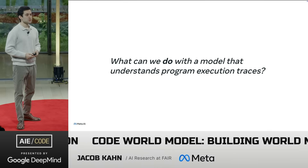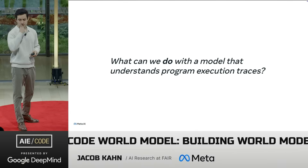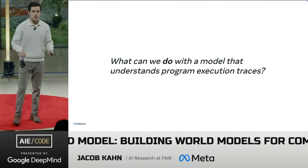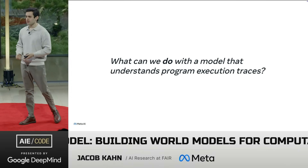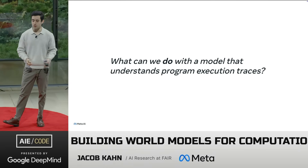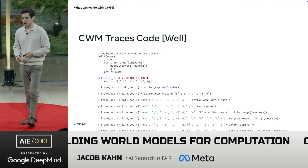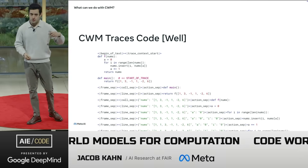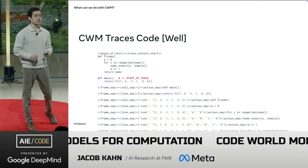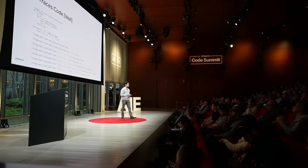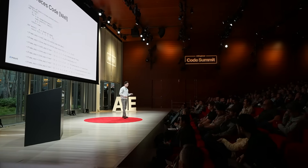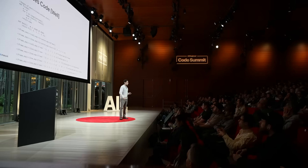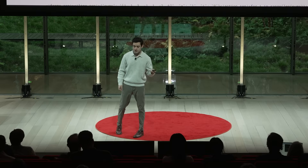What can we actually do with a model that understands program execution traces and has a good understanding of how a program will run, predicting future state? CWM traces code really well. We've shown it execution traces, and I can give it a function and it can trace line by line that function with very high accuracy. It can show me the values of local variables at certain points — again, with a lot of precision.